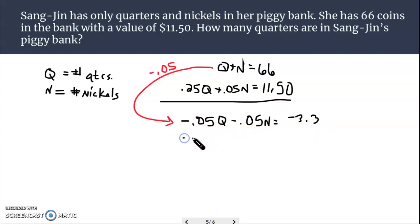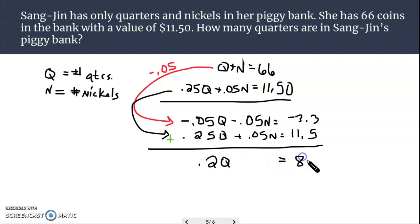I'm going to add positive 0.25Q. Just rewriting that second equation. We have a positive 0.05 N and we have the 11.5. Now we're going to add these two equations together. Negative 0.05 plus 0.25 makes positive 0.2Q. N's cancelled out and I'm left with 8.2 here.